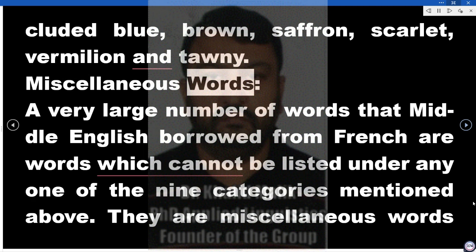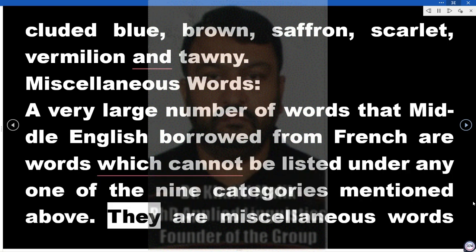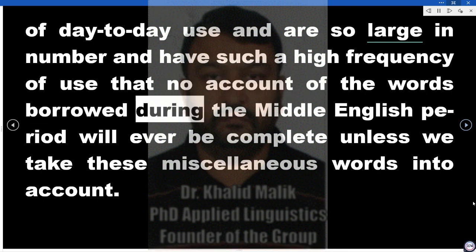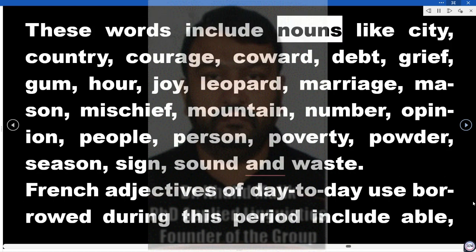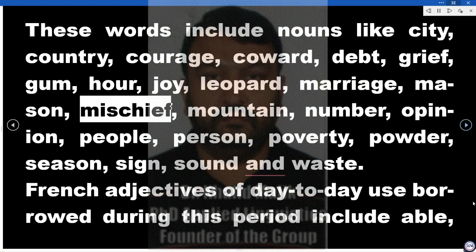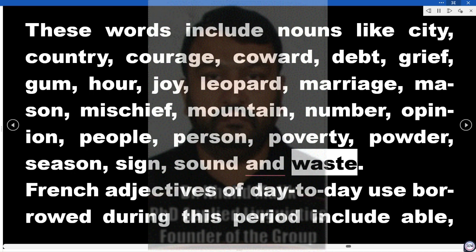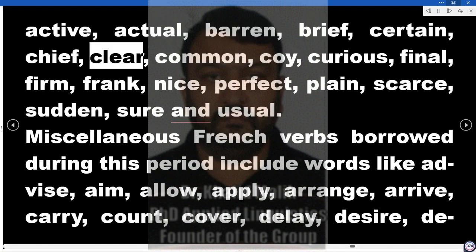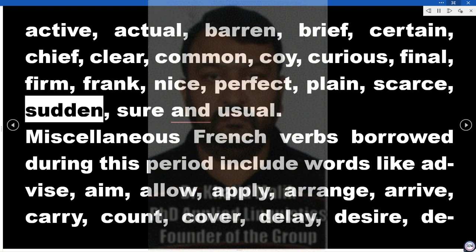Miscellaneous words. A very large number of words that Middle English borrowed from French are words which cannot be listed under any one of the nine categories mentioned above. They are miscellaneous words of day-to-day use, so large in number and with such a high frequency of use that no account of words borrowed during the Middle English period will ever be complete unless we take these miscellaneous words into account. These words include nouns like city, country, courage, coward, debt, grief, gum, hour, joy, leopard, marriage, mason, mischief, mountain, number, opinion, people, person, poverty, powder, season, sign, sound, and waste. French adjectives of day-to-day use include able, active, actual, barren, brief, certain, chief, clear, common, coy, curious, final, firm, frank, nice, perfect, plain, scarce, sudden, sure, and usual.